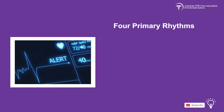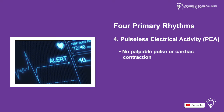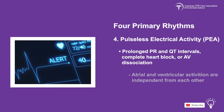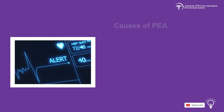The last cardiac arrest rhythm in children is pulseless electrical activity, or PEA. This is defined by the lack of a palpable pulse or cardiac contraction, even with the presence of organized cardiac electrical activity. PEA presents with prolonged PR and QT intervals, complete heart block, or AV dissociation, which is when atrial and ventricular activation are independent from each other. PEA can be caused by different factors, many of which are represented by the reversible causes known as the five H's and five T's.